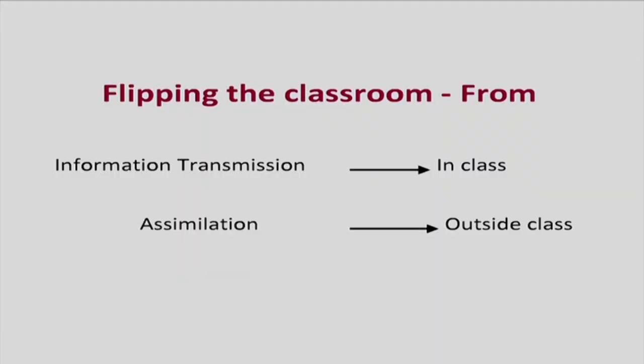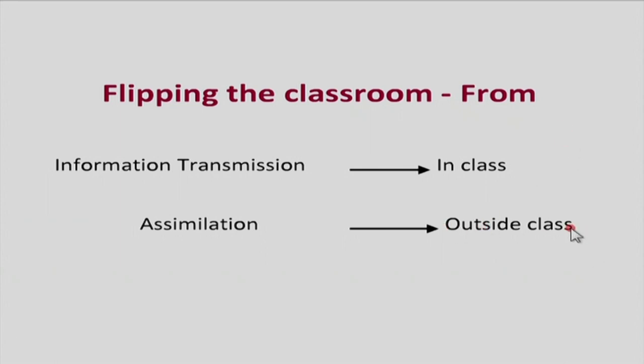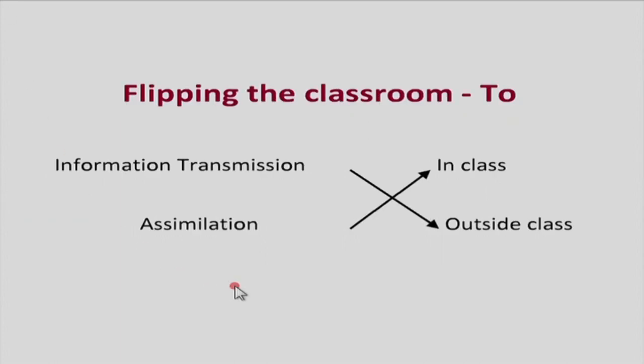In a traditional classroom there is a lot of information transmission happening in class, and the teacher typically assigns homework, assignments, maybe a project at the end of the semester to be done outside. The actual assimilation of the material — thinking more deeply, doing higher order thinking activities with the content — all this is done by students outside of class. What the flipped classroom does is essentially invert the two.